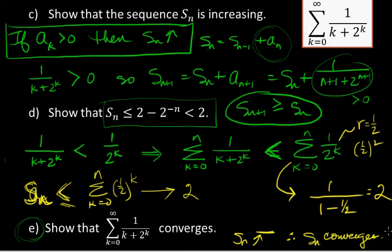Now we know in part E that S sub N is an increasing sequence bounded above by 2, therefore S sub N converges. When we say the series converges, we always mean its sequence of partial sums converges.